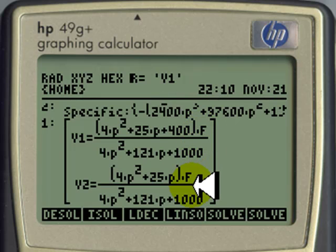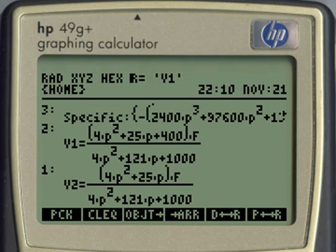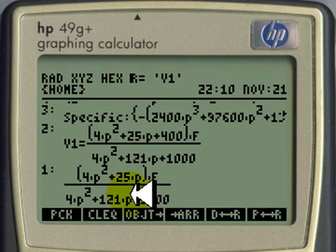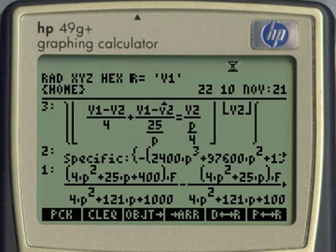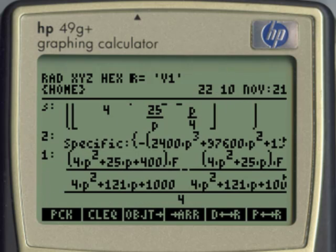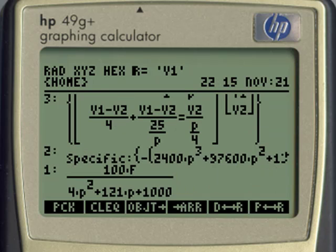Let's subtract v1 minus v2 and divide that by 4. But to do that, allow me, we go and break the object into pieces. And there is v2. Let me clear the tag of this one. Not forget that that is v2. Swap. Swap. Clear equation. That is v1. Swap again. Subtract. 4. Divide. And now we simplify the formula with the eval key. Evaluate. That is the current through the capacitor. Let's write it down. 100F divided by 4P squared, 121P plus 1000.